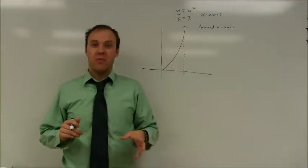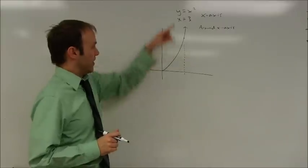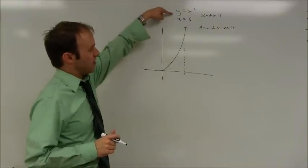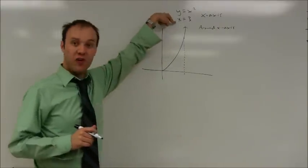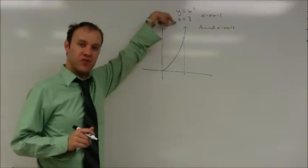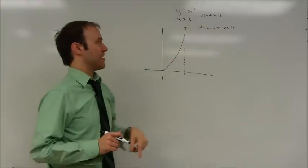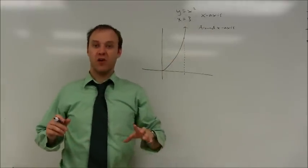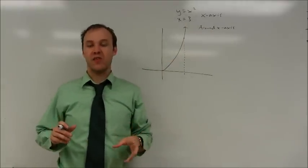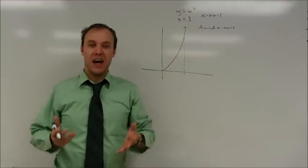I'm going to find the volume of the region bounded by y equals x squared, the vertical line x equals 3, and the x-axis. Specifically, I want to find the volume when this is rotated around the x-axis.